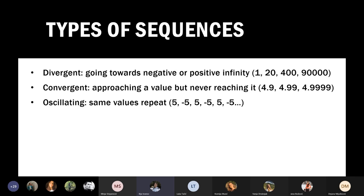The types of sequences are divergent, convergent, and oscillating. Divergent sequences go towards negative or positive infinity. Convergent sequences approach a value but never reach it — for example, 4.9, 4.99, 4.9999, and so on, usually as fractions. Oscillating sequences repeat the same values, like 5, −5, 5, −5, etc.